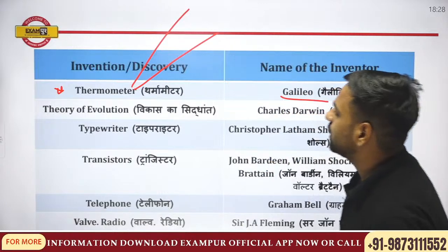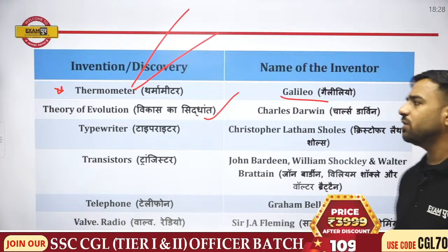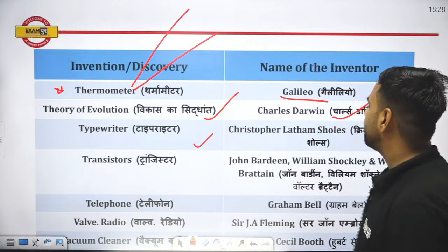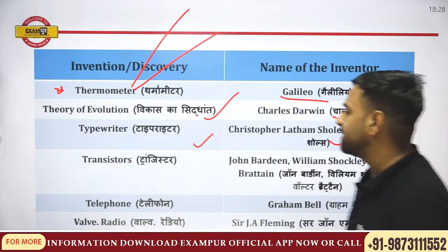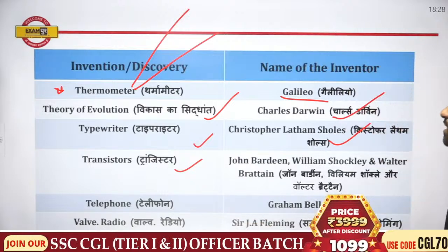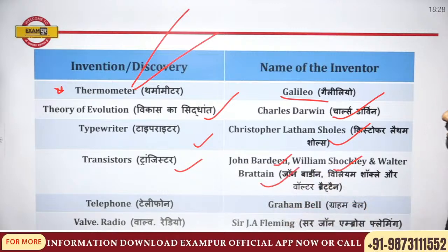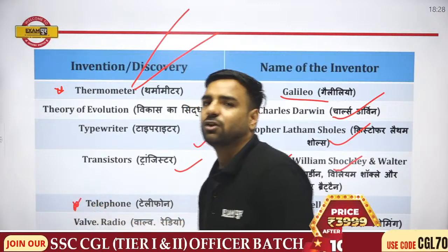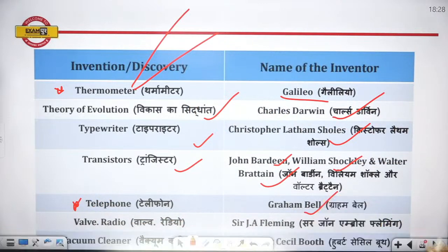Theory of evolution was given by Charles Darwin. Typewriter was discovered by Christopher Latham Sholes. Transistor was discovered by John Bardeen, William Shockley, and Walter Brattain. Telephone was discovered by Graham Bell. Valve radio was discovered by Ambrose Fleming.